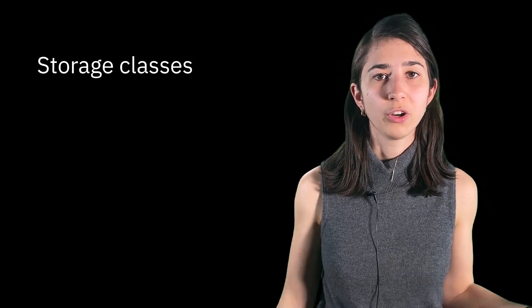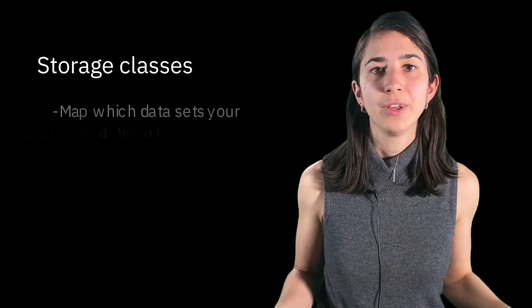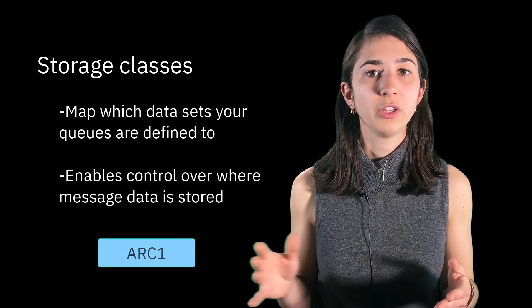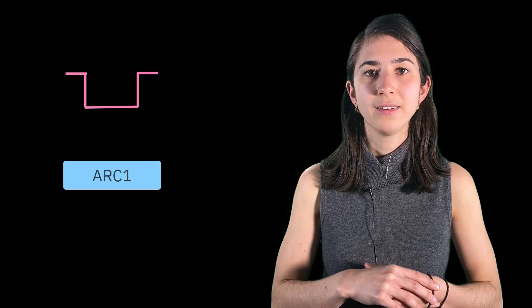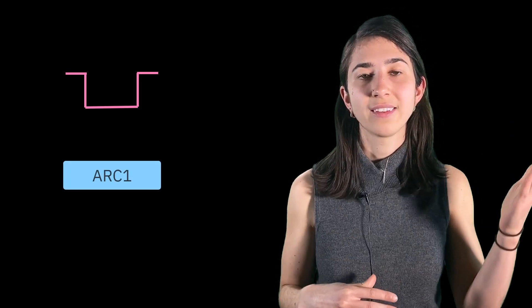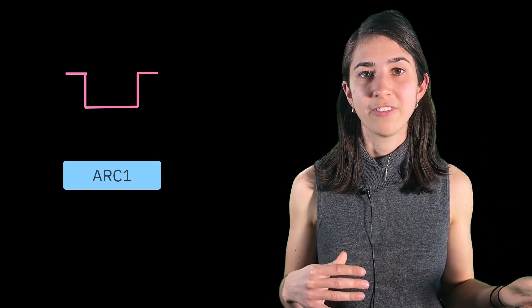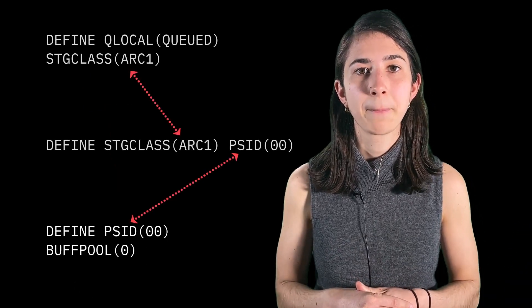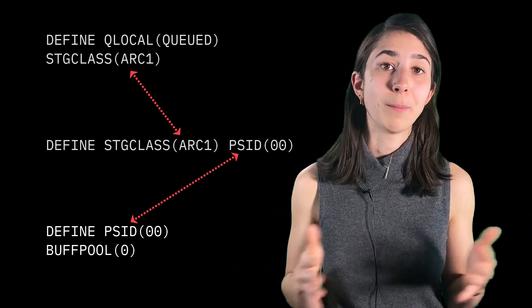Storage classes actually map different queues when they're initially defined to a particular page set. If you define a new queue, it will be defined with a storage class in mind, and then that storage class has already, hopefully, been defined with one or more page sets associated with it. So storage classes allow for mapping to occur.